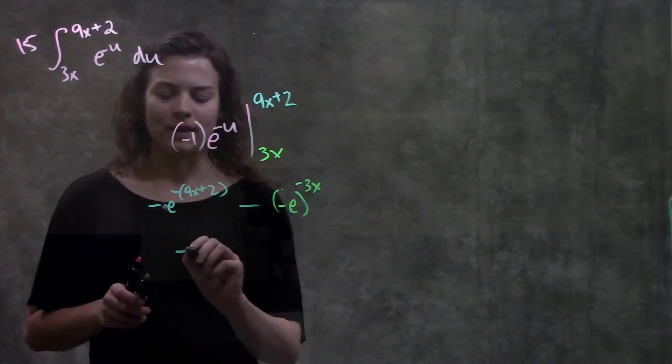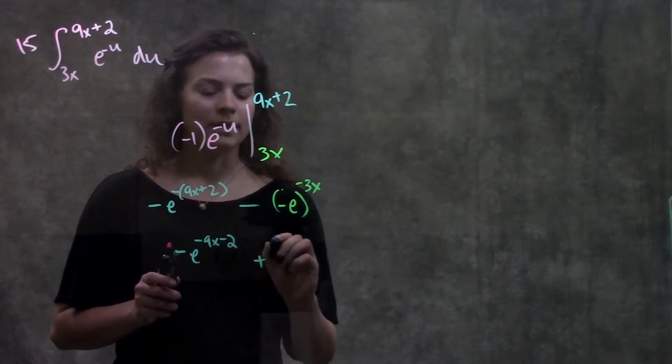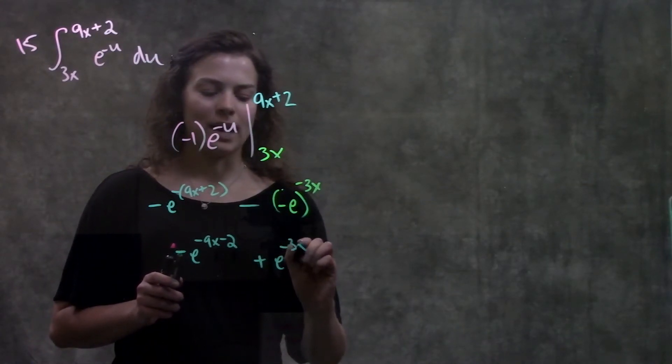And simplifying this out a little bit, we get negative e to the minus 9x minus 2 plus e to the negative 3x.